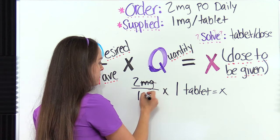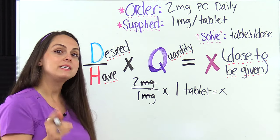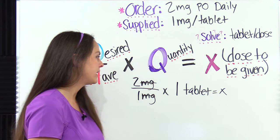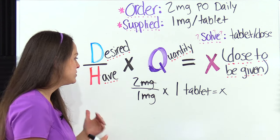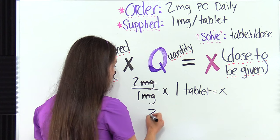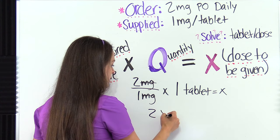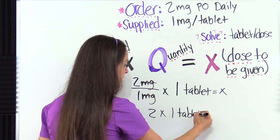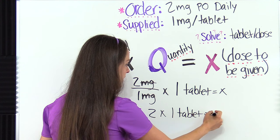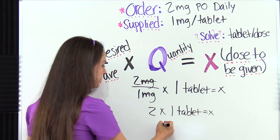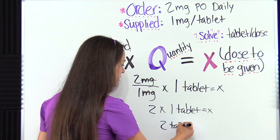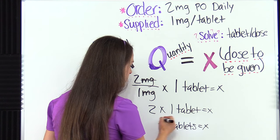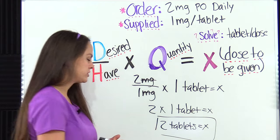We mark them out. Now if they didn't match, we would have to take an extra step and convert — you'll see how to do that a little bit later. So we're going to divide: two divided by one is two, times one. Two times one is two. So our answer is two tablets — that's how many we're going to administer to the patient.